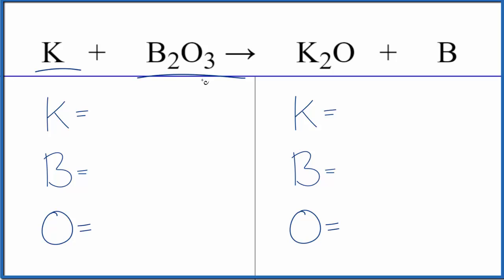This is a single displacement reaction. The potassium replaces the boron. In the diboron trioxide, we have boron by itself, now the potassium is with the oxygen.